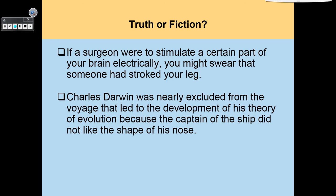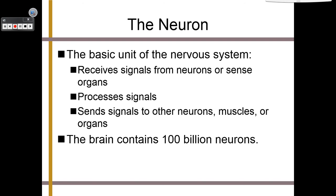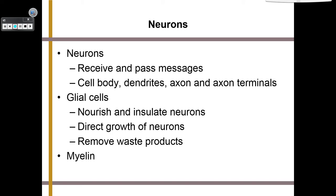Let's start with the nervous system, or how our body is wired. The nervous system has one key component: the neuron. The neuron is the basic unit of the nervous system. It receives signals from other neurons or sense organs, processes signals, and sends signals to other neurons, muscles, or organs. Your brain contains about a hundred billion neurons. When you see neuron, think brain cell — it is essentially the same thing.